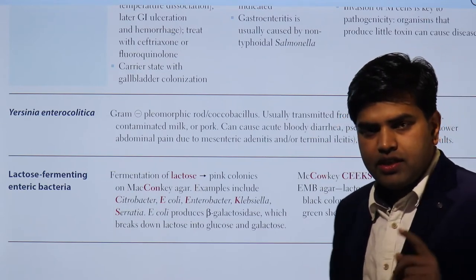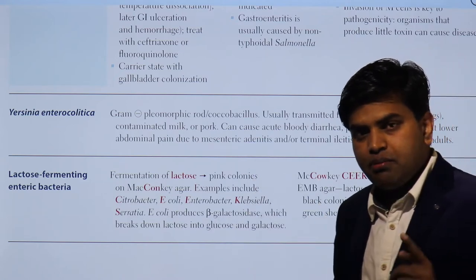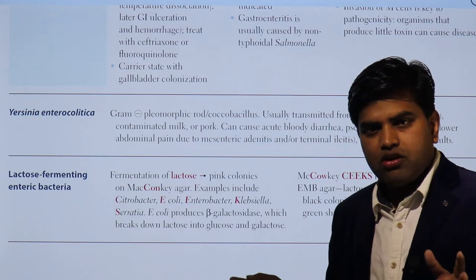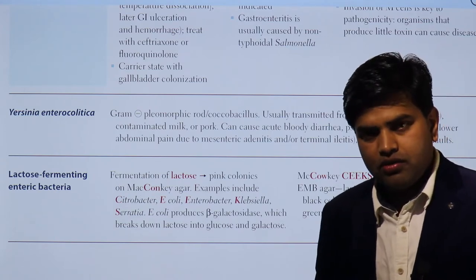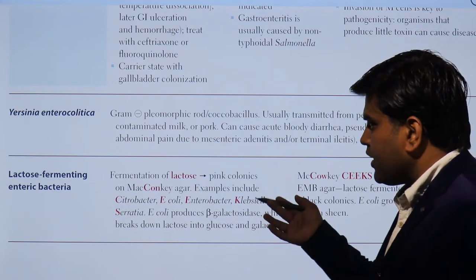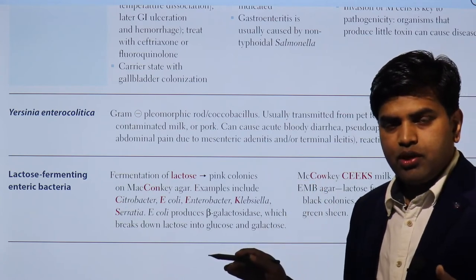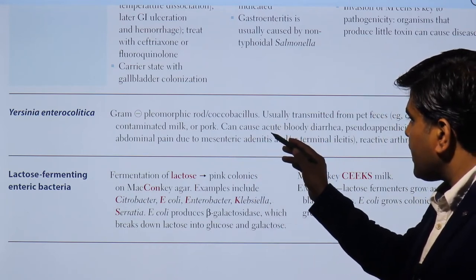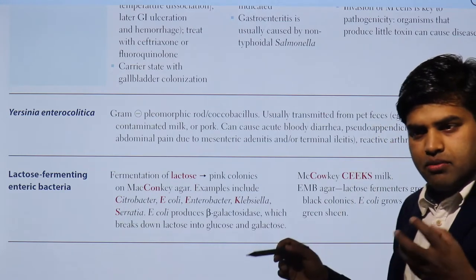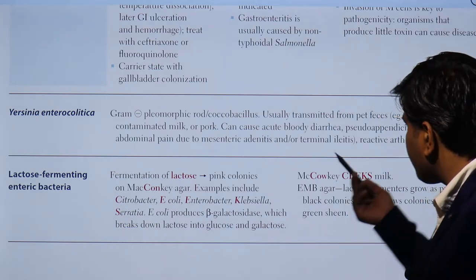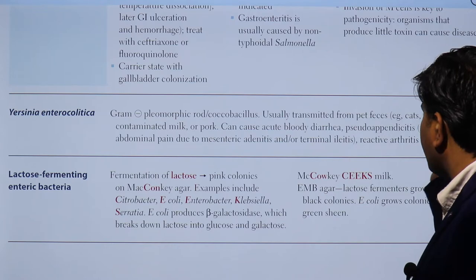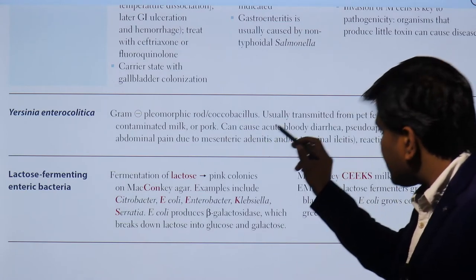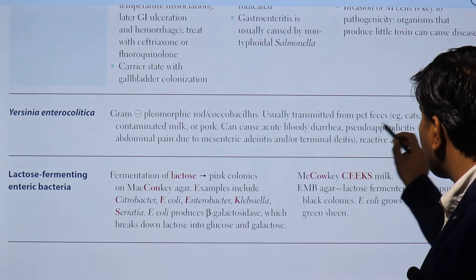Yersinia has two species: Yersinia pestis and Yersinia enterocolitica. Yersinia pestis is responsible for the bubonic plague and pneumonic plague - very deadly diseases that caused outbreaks in the past, wiping out large populations. Regarding Yersinia enterocolitica, it is a gram-negative pleomorphic rod or coccobacilli, usually transmitted from pet animals such as cats and dogs, or contaminated milk or pork.